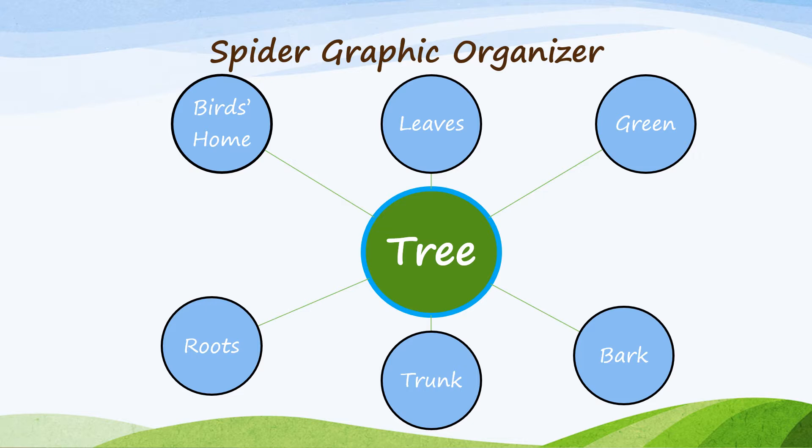On the inside I have the word tree, and then around it I brainstorm some ideas about a tree. It has leaves, it's green, it has bark, a trunk, there are deep roots, and it's home to birds. Once I have done that, I can actually draw the shape of a tree or make a pattern of it.